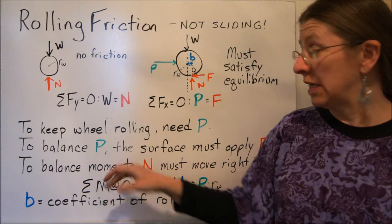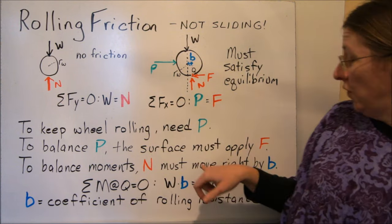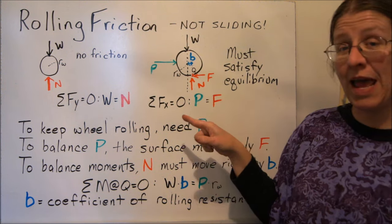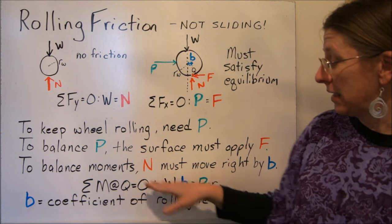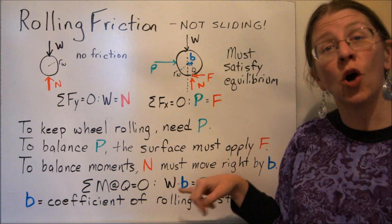So the general principle here is to keep the wheel rolling you're going to need a P. To balance the P, the surface must apply some sort of friction force F, as well as some sort of normal force N to balance the weight. To balance the moments, N has to move to the right by some distance, which we're going to call B.